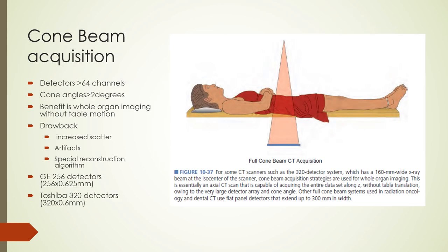Newer CT scanners often feature detectors with more than 64 channels. As more detector channels are added, the effect of the cone angle becomes significant, requiring specialized cone beam reconstruction algorithms — called cone beam CT. Cone beam acquisitions allow imaging of large moving structures like the heart with a single axial rotation, but drawbacks include increased scatter and the potential for cone beam-related artifacts.